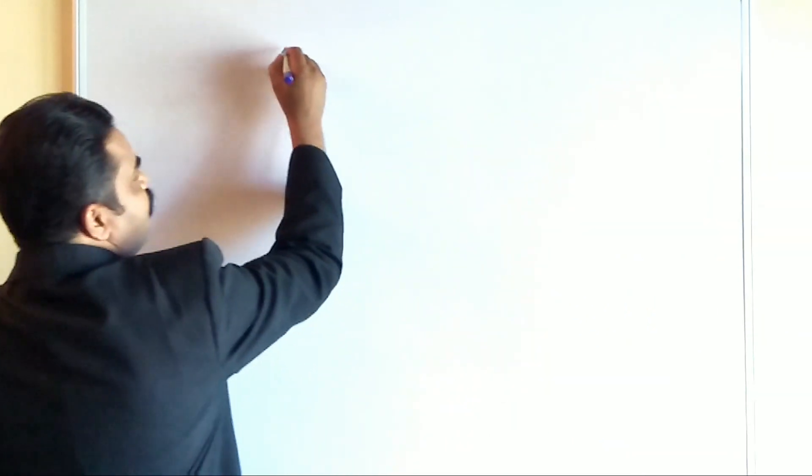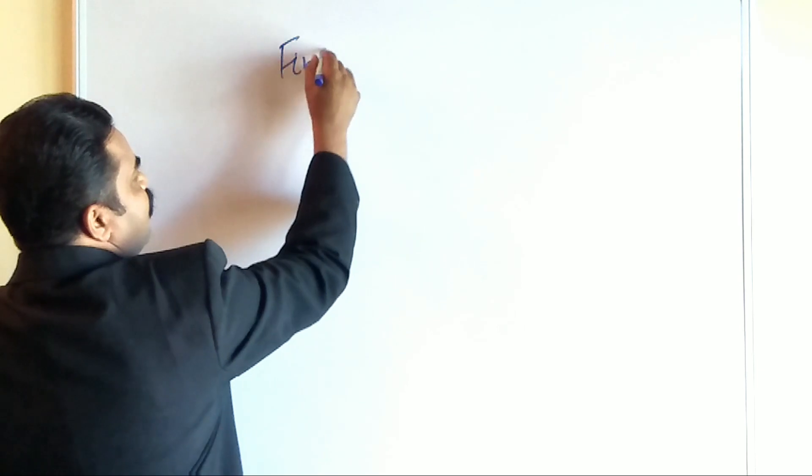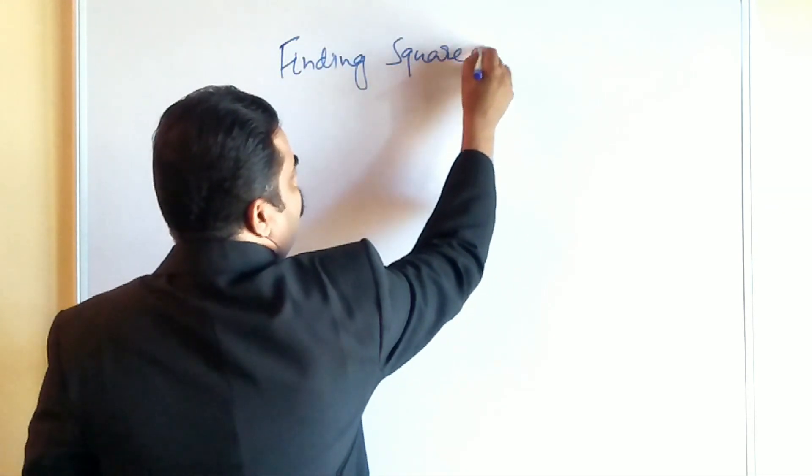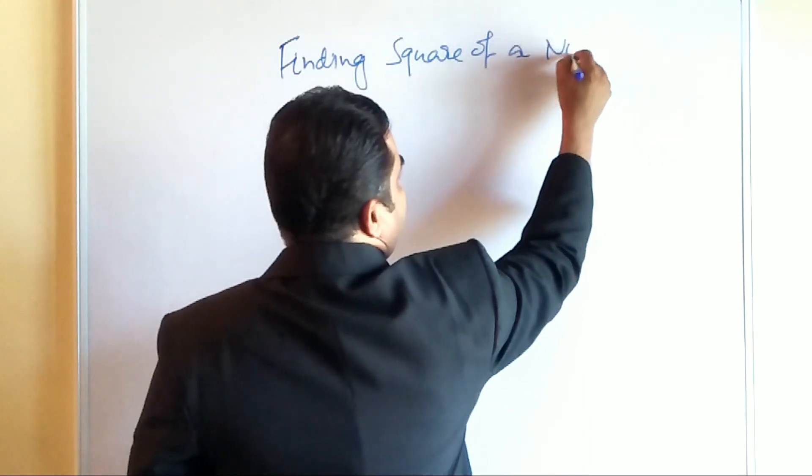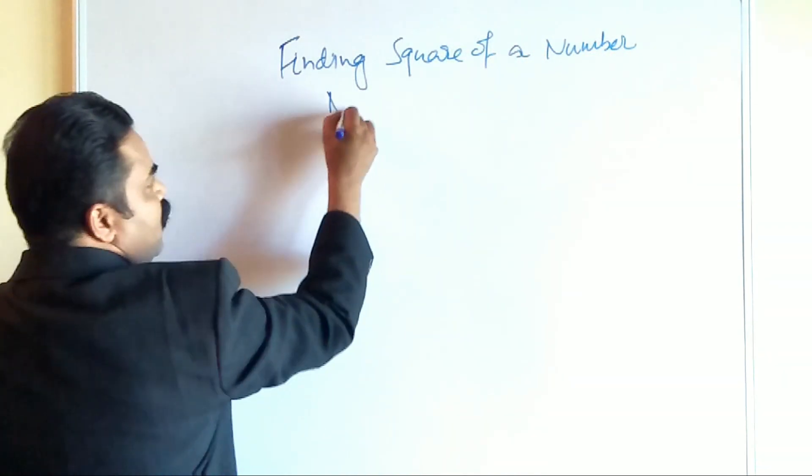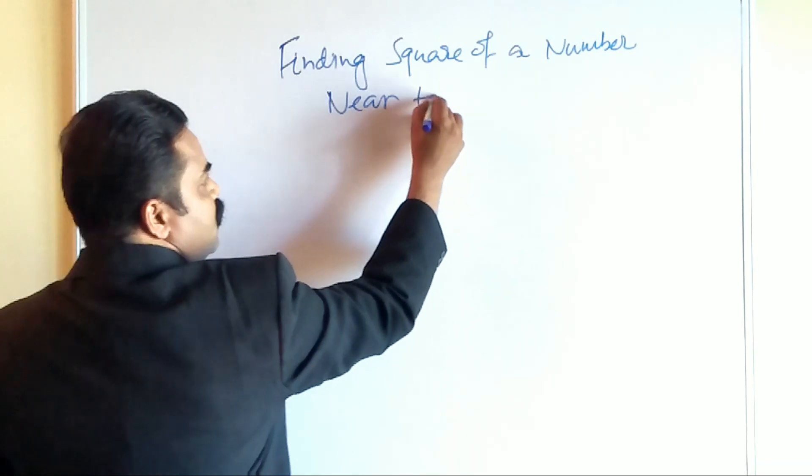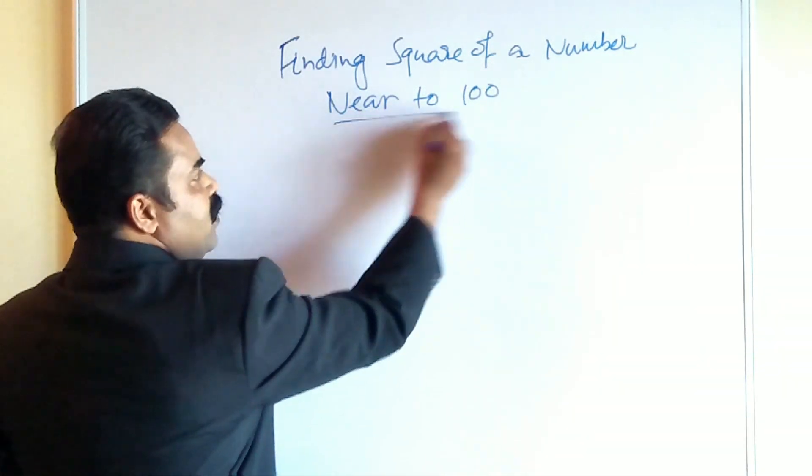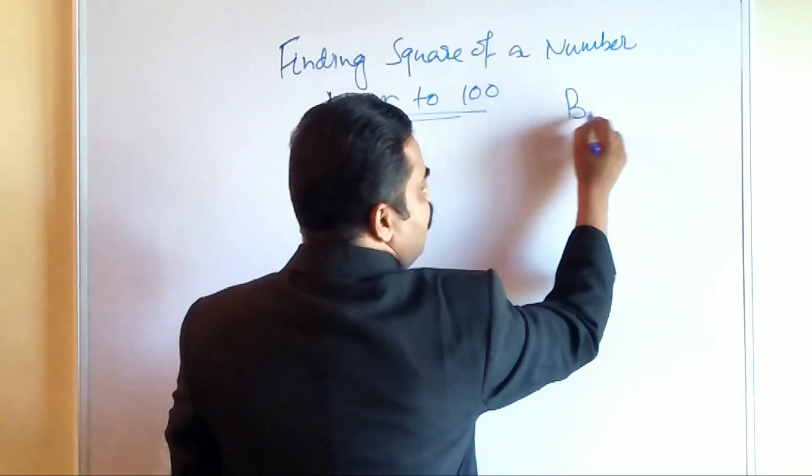Let us learn it. Finding square of a number near to 100. So near to 100, what does it mean? Near to 100 means our base number is 100.